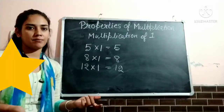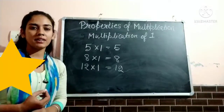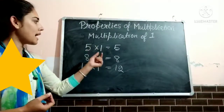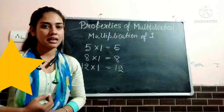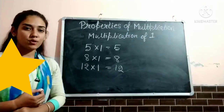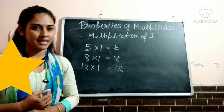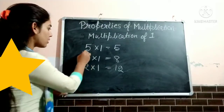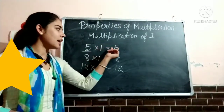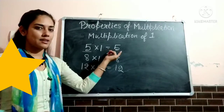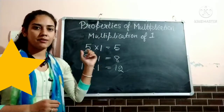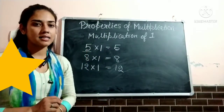If you want to take a bigger number and you will multiply that bigger number by 1, then the answer is that number itself. So the property is: the product of a number and 1 is the number itself. This is the property of multiplication of 1 — if you will multiply 1 by any number, the answer is that number itself.